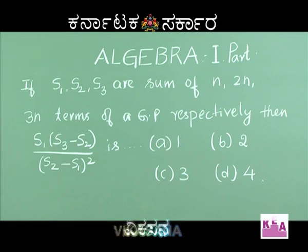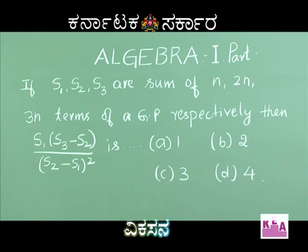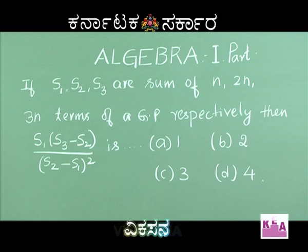Let's discuss shortcuts. I'll note that S1 into S3 minus S2 divided by S2 minus S1 whole square. The options are: A) 1, B) 2, C) 3, D) 4. S1, S2, S3 are the sum of N, 2N, and 3N terms of a geometric progression.